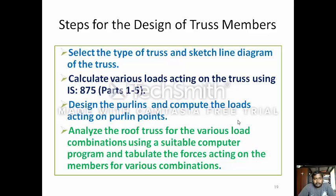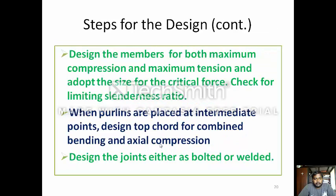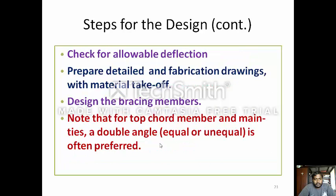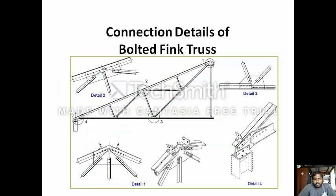Steps for designing the truss: First, select the type of truss and sketch the line diagram. Second, calculate the various loads acting on the truss using IS 875, design the purlins, and compute the loads acting on the panel points. Then analyze the roof truss for various load combinations using a suitable computer program and tabulate the forces in each member. Next, design the members for both maximum compression and maximum tension and adopt the member size. Check for the limiting slenderness ratio. When purlins are placed at intermediate points, design the top chord for combined bending and axial compression. Design the joints as either bolted or welded. Check for allowable deflection. Prepare detail and fabrication drawings with material take-off. Design a bracing diagram. Note that for top chord members and main ties, a double angle is often preferred.